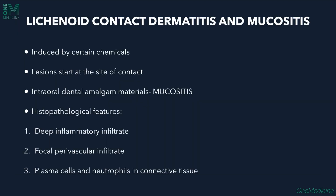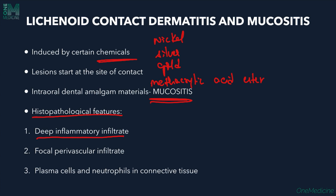Coming to lichenoid contact dermatitis and mucositis — these are induced by certain chemicals such as nickel, silver, gold, and methacrylic acid ester used in the car industry. Lesions are at the site of contact. Intraoral dental amalgam materials can cause mucositis. Histopathological features include deep inflammatory infiltrate, focal perivascular infiltrate, and an inflammatory infiltrate containing plasma cells and neutrophils. After discontinuation of the offending substance, such as dental amalgam, the lesion will resolve on its own.